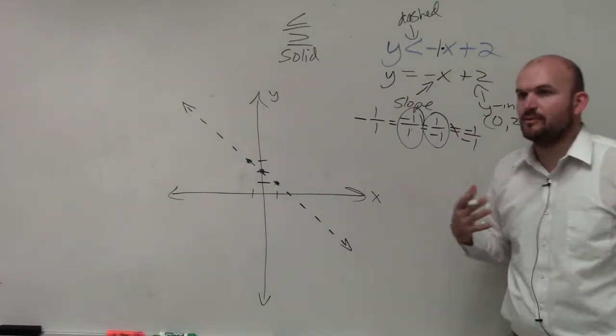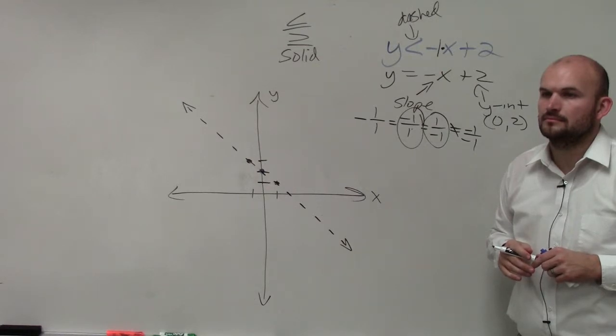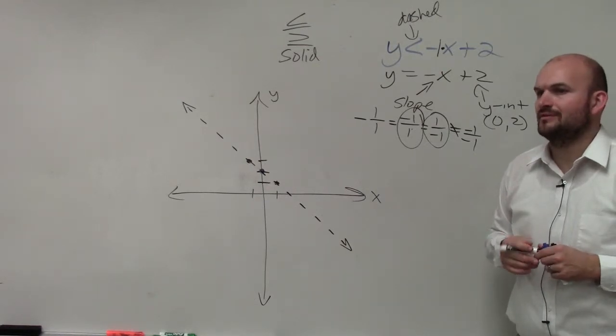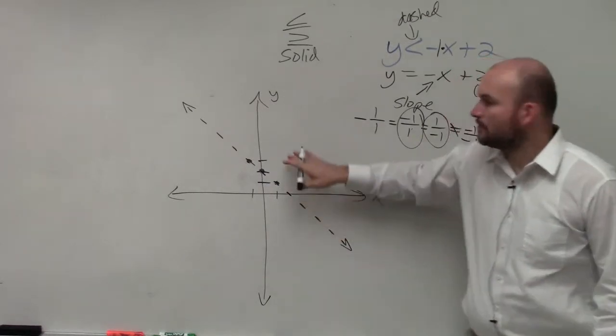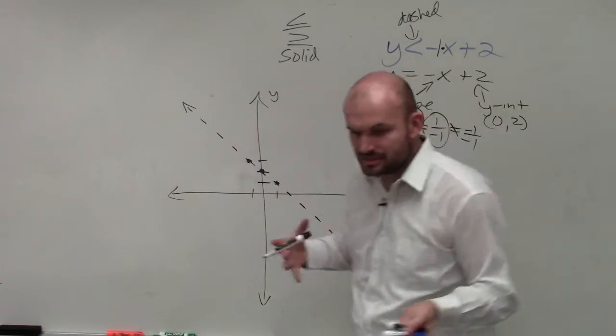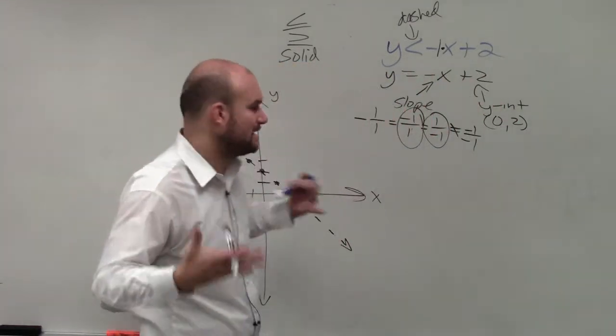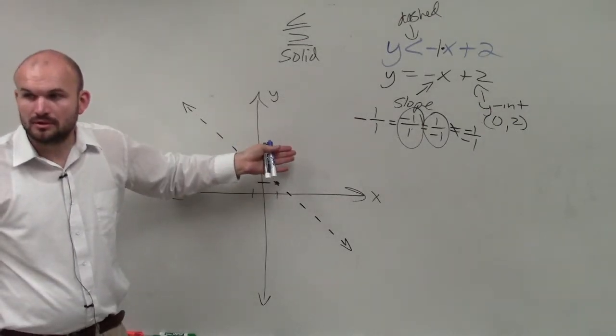Now, the next thing that we want to do is determine the shading. Systems of equations, we're determining points that make our inequality true. So we want to be able to determine points above or below.